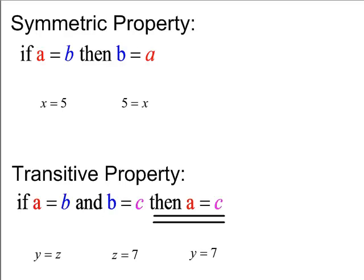Symmetric property. It's just order. If A equals B, then B equals A. If x equals 5, 5 equals x. Whoa, tough. Let's keep going.